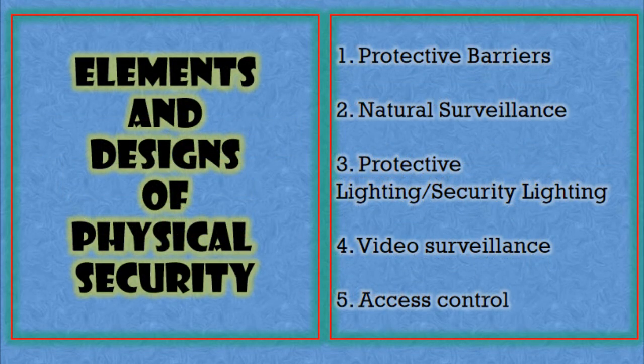The elements and designs of physical security — there are five mentioned in our presentation and notes: number one, protective barriers; number two, natural surveillance; number three, protective or security lighting; number four, video surveillance; and number five, access control. We are going to discuss them one by one in this chapter.